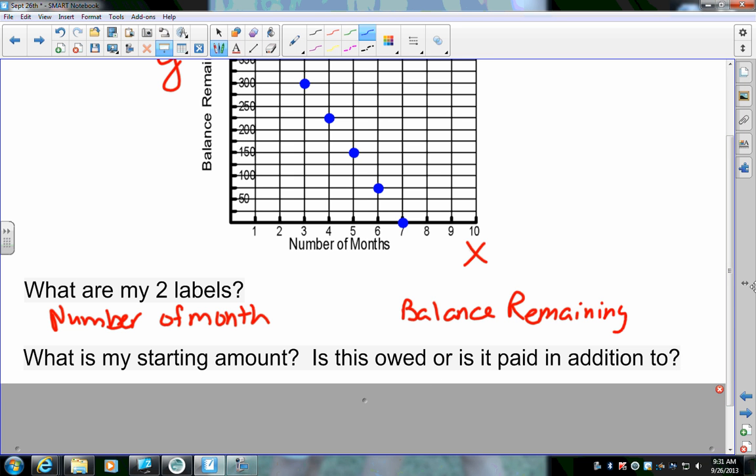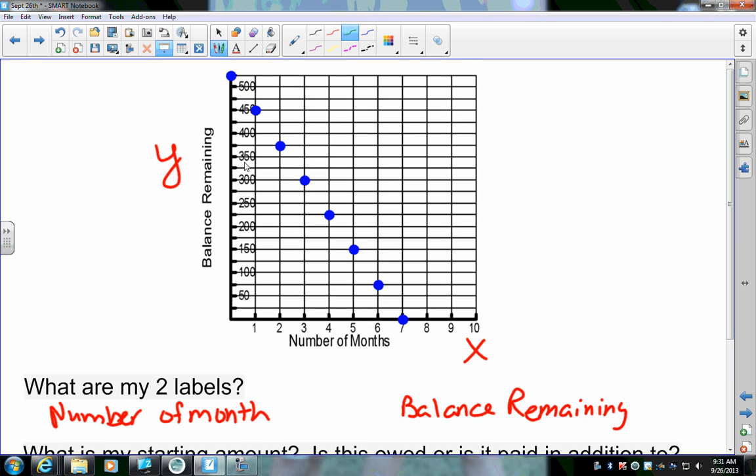Now, the next question they ask me is, what is my starting amount? Is it owed or is it paid in addition to? So, my starting amount right now, circle this point up there on your graph. That right there is my starting point. That's where my graph begins. That point is zero. And what number is that? Five. It should be up above 500. Each line goes, look down here, each line, every two line is 50. So, it's 25, 50, 75, 100. So, it's 525.